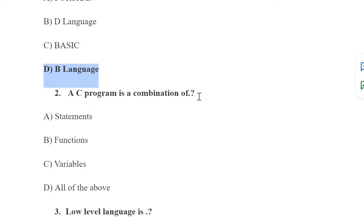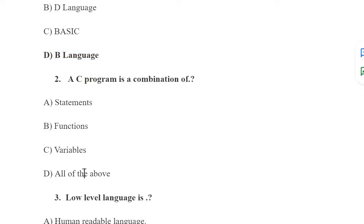Next is: A C program is a combination of what? The options are statements, functions, variables, or all of the above. It is a combination of statements, yes. Functions, yes. Variables, yes. So all of the above, option D is the correct answer.